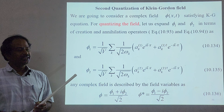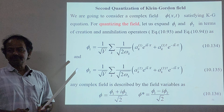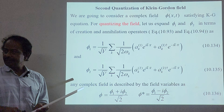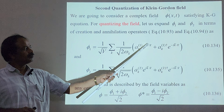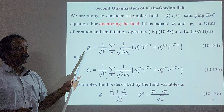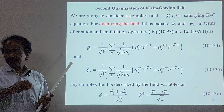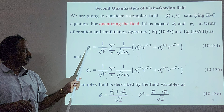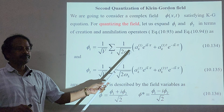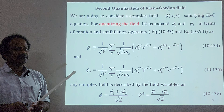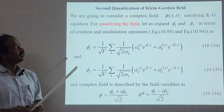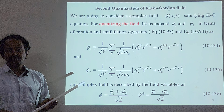This field function is written in terms of operators — raising and lowering operators, also called creation and annihilation operators — as well as in terms of plane wave equations. Any wave amplitude propagating in space with respect to time is the field function, and it depends on both the raising and lowering operators as well as the wave function. With this introduction, we will learn in detail about second quantization of Klein-Gordon fields.